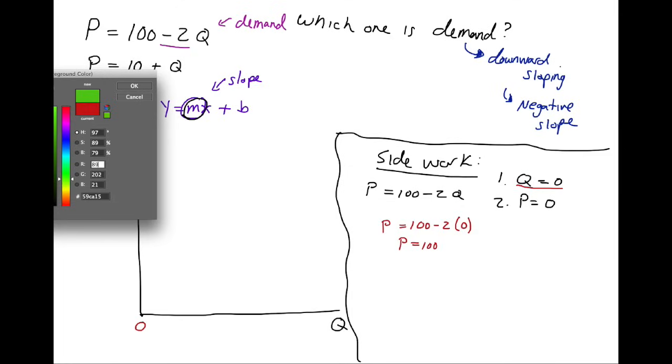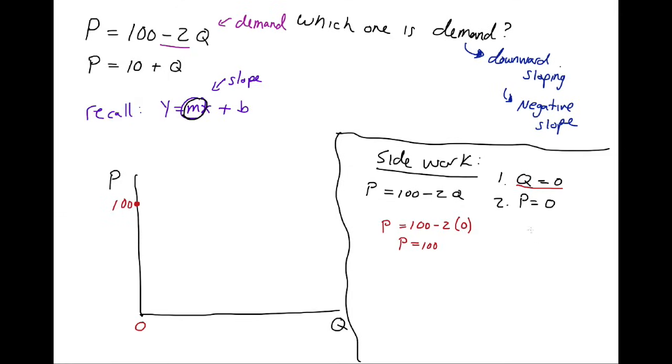Now I'll go with a different color. Let's go with green to show when P equals 0. Well when P equals 0, again we're looking at the origin of P equals 0. It must be somewhere along here on Q.